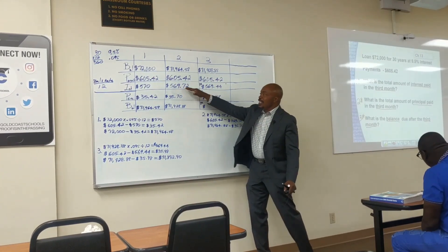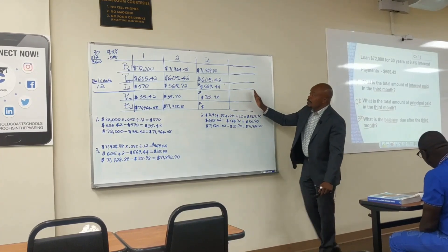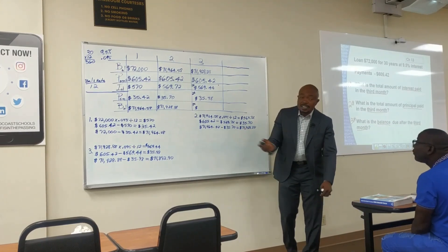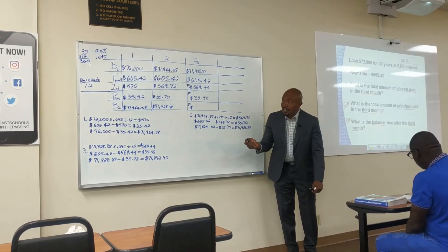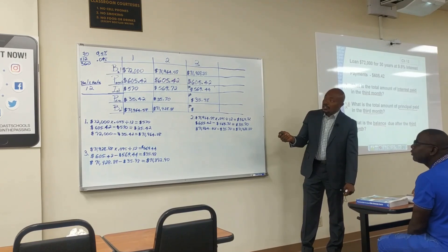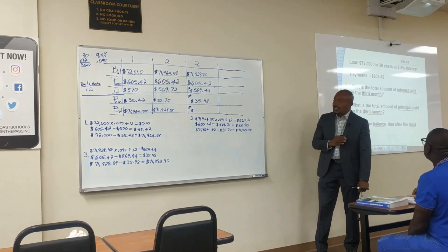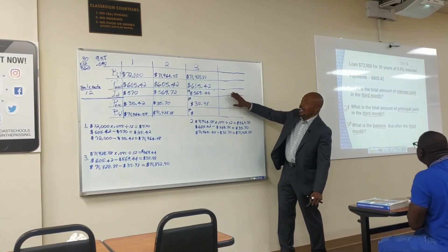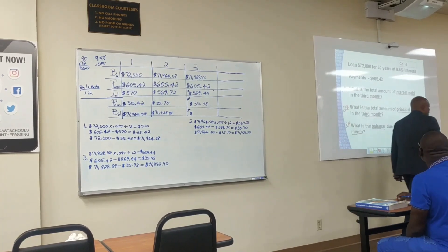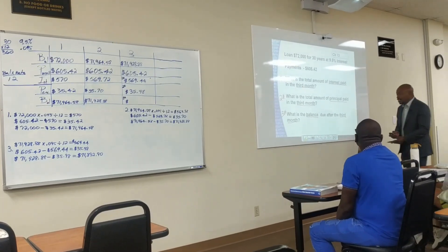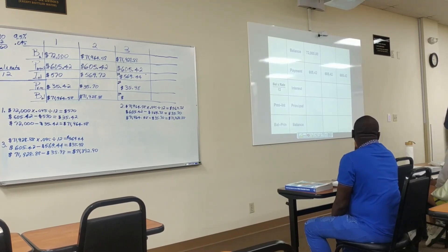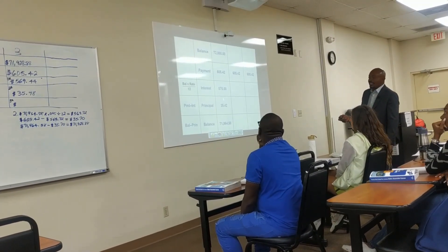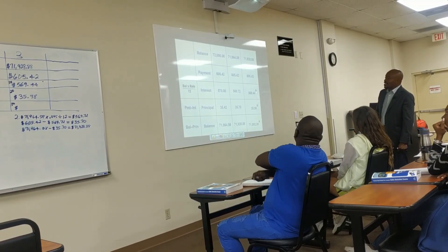You can see over time how the interest portion decreases and the principal portion increases. By the time you reach month 360 — because 30 years times 12 equals 360 payments — almost none of your $605.42 will go toward interest; nearly all of it will go toward principal. Let's verify — yes, our answers are exactly correct.